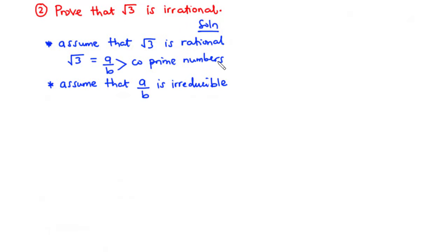What this primarily means is that the only common factor between a and b is 1. So, aside from 1, there isn't any common factor between a and b.